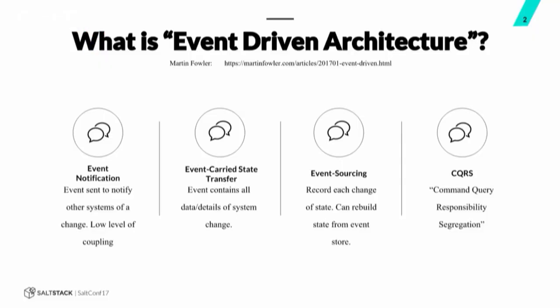What is event-driven architecture? Martin Fowler has several good blog posts talking about what event-driven architecture is and the different types. There are four that he talks about: event notification, event-carried state transfer, event sourcing, and CQRS — Command Query Responsibility Segregation. Today we're going to talk mostly about the first two. Event sourcing, the third one, is interesting — it's about using events and keeping track of them so you can build the proper state of your infrastructure from those events.